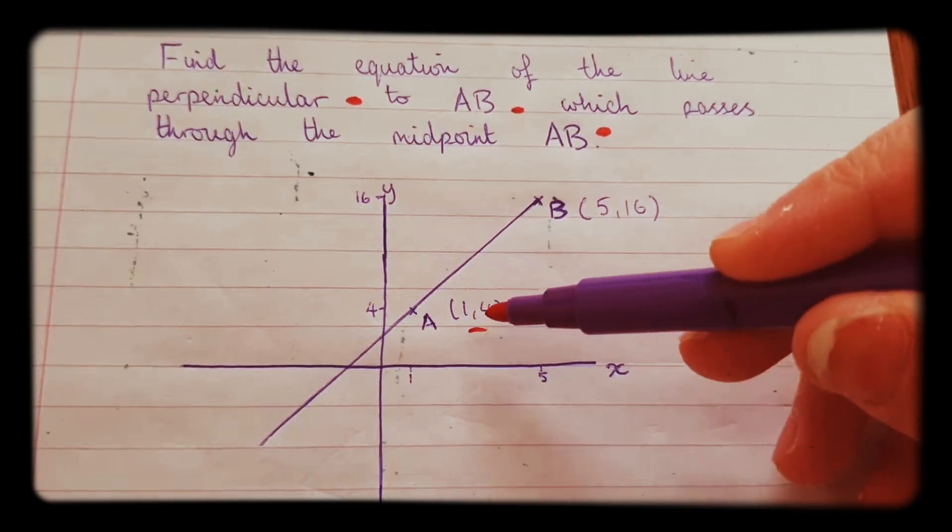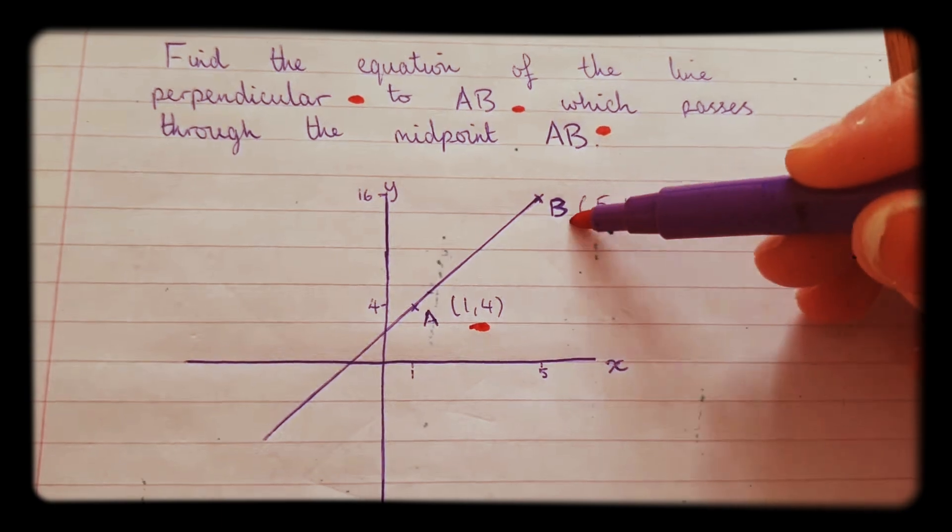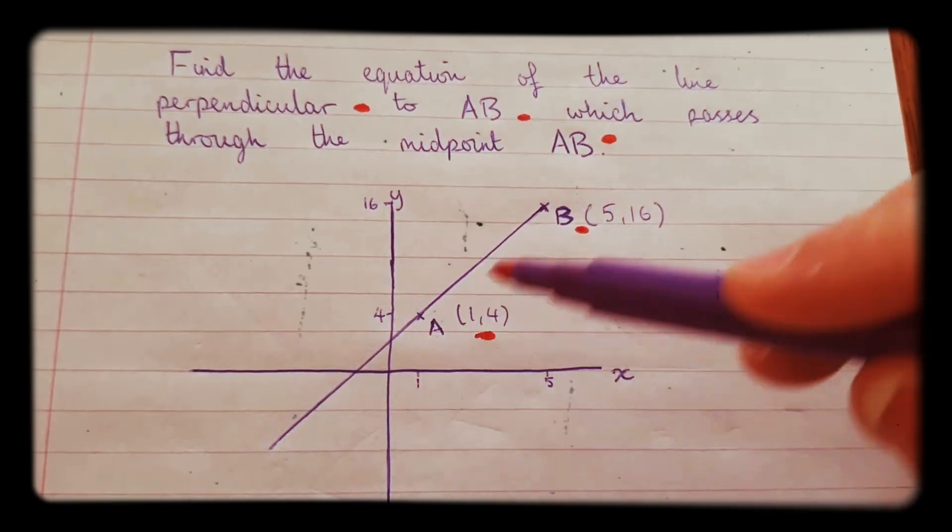So point A at (1,4) and B at the point (5,16), and there's the straight line.